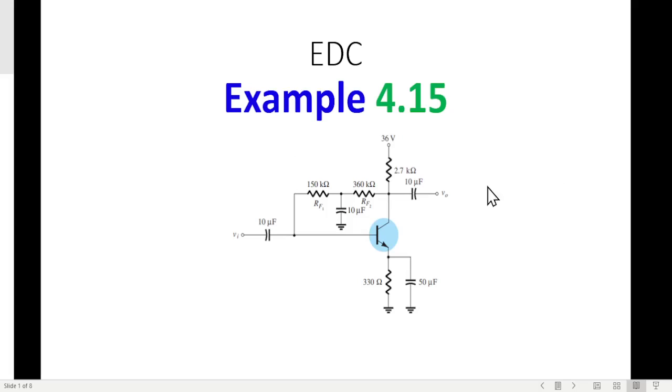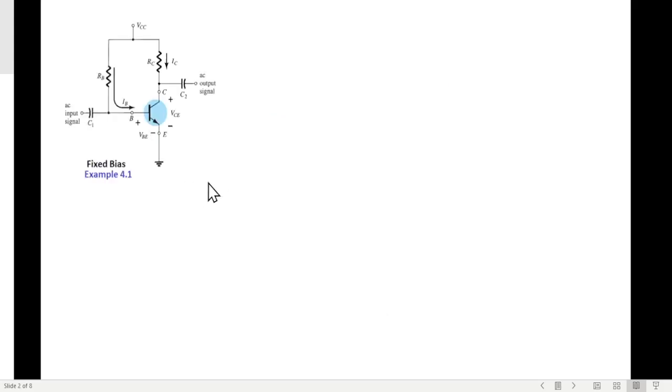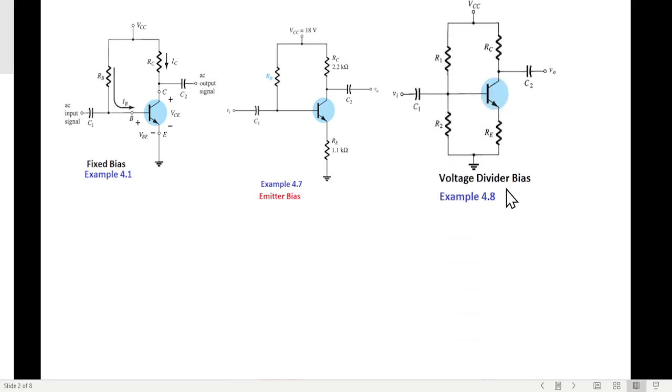This is in continuation with our chapter 4 videos from EDC, and today we'll be discussing example 4.15. Just to recall, we had done fixed bias example 4.1, then emitter bias example 4.7, then voltage divider bias example 4.8, and feedback bias example 4.12.